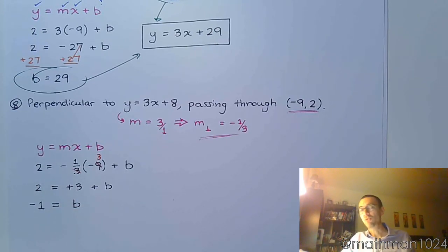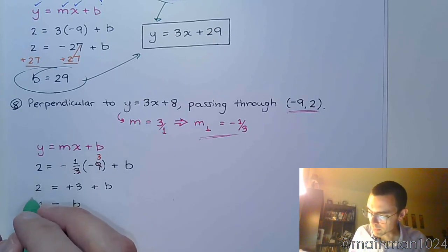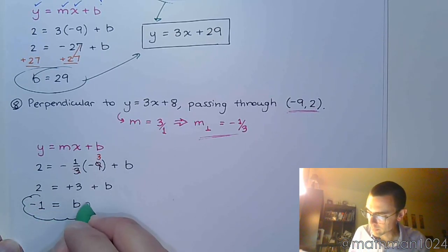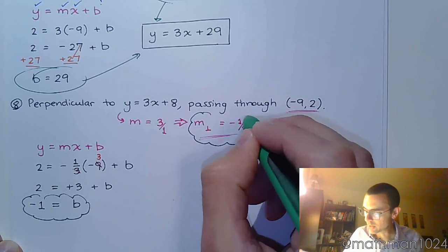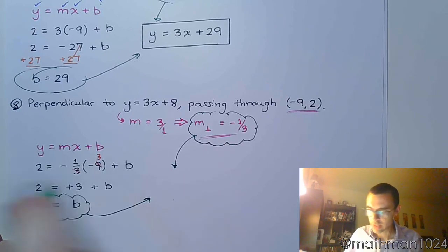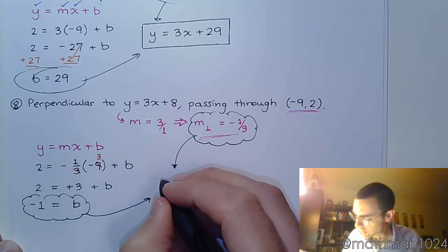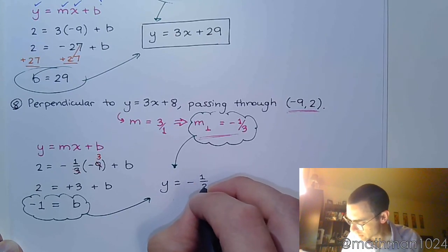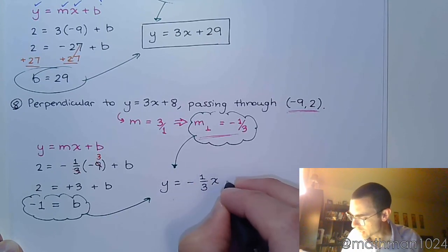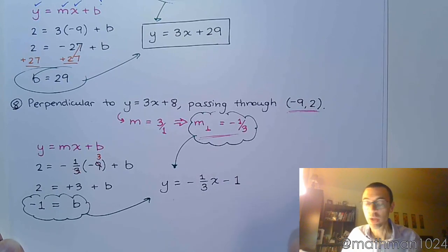If that's throwing you off by me not writing subtract 3 on both sides, then do that in your notes. Okay? So that's my slope. Excuse me. That's my b value. That's my slope. And you put these guys together. So y equals negative 1 third x minus 1.